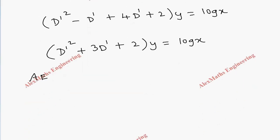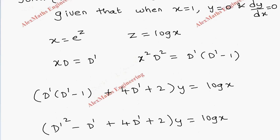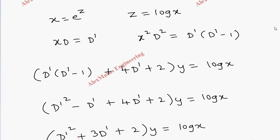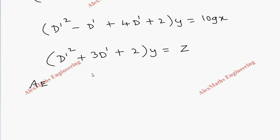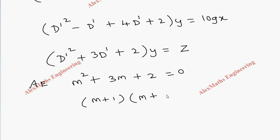Before writing the auxiliary equation, we substitute log x as z on the right-hand side, so it becomes z. Now for the auxiliary equation: M squared plus 3M plus 2 equal to 0. Factorizing gives (M plus 1)(M plus 2) equal to 0, so M equals minus 1 and minus 2.